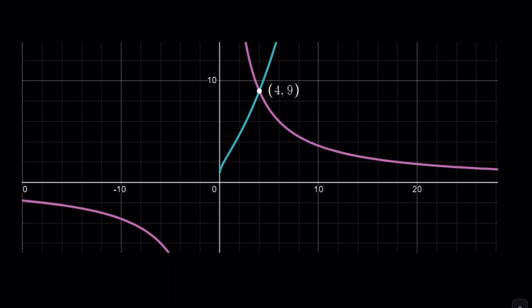Let's check out the graph. This function being rational — 36 divided by x — has two branches, but only one of them is valid because x needs to be positive. And they intersect at the point (4, 9), which means x equals 4 once again.